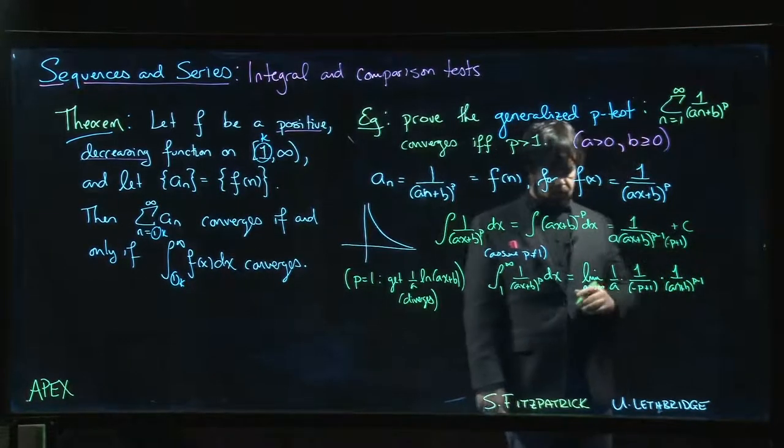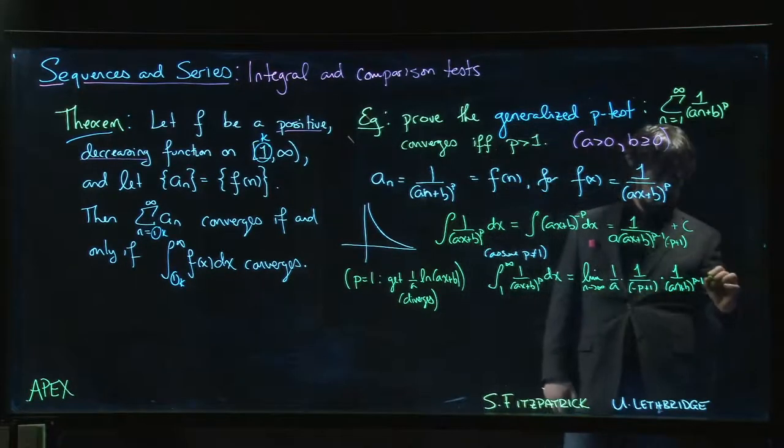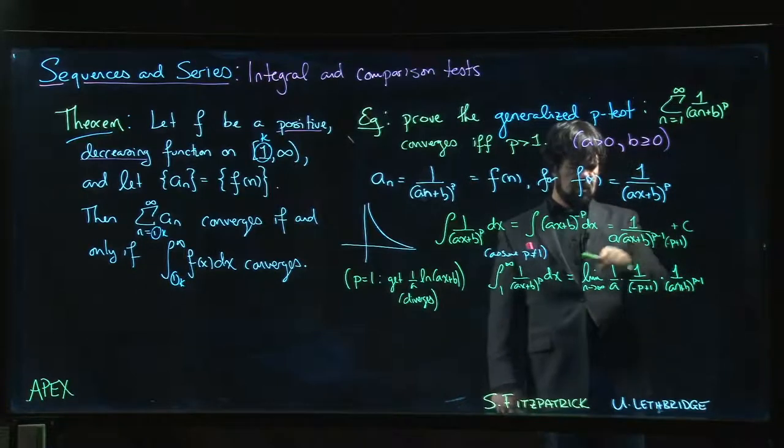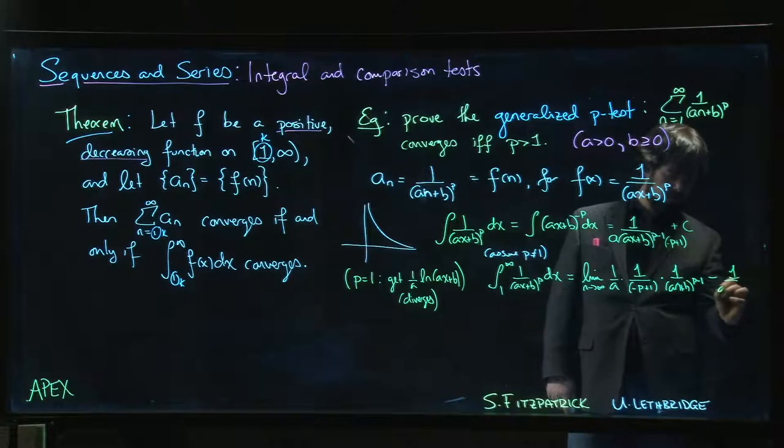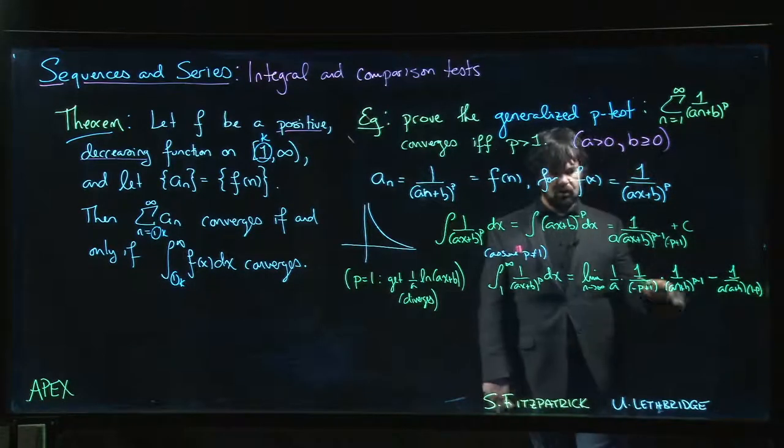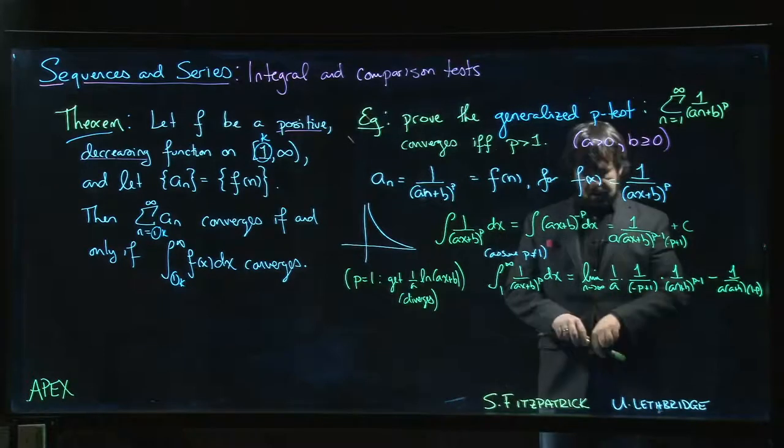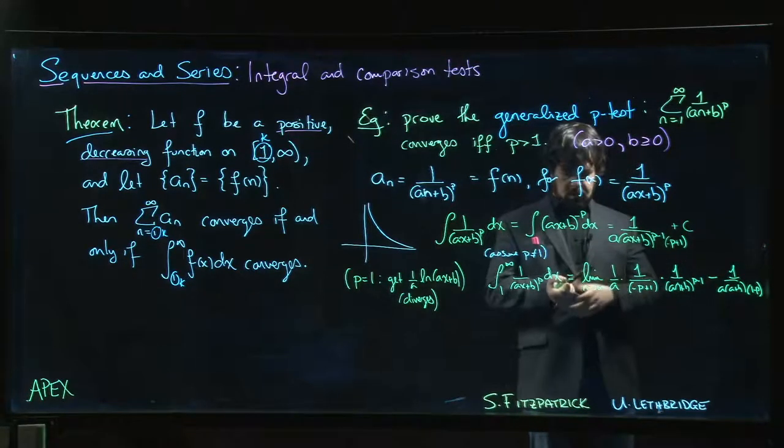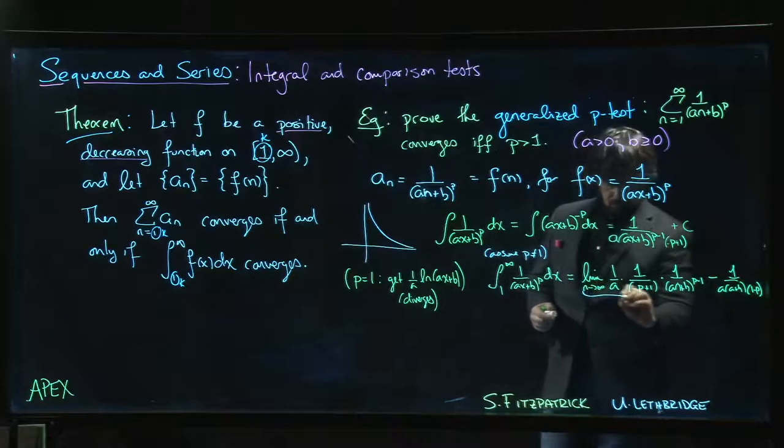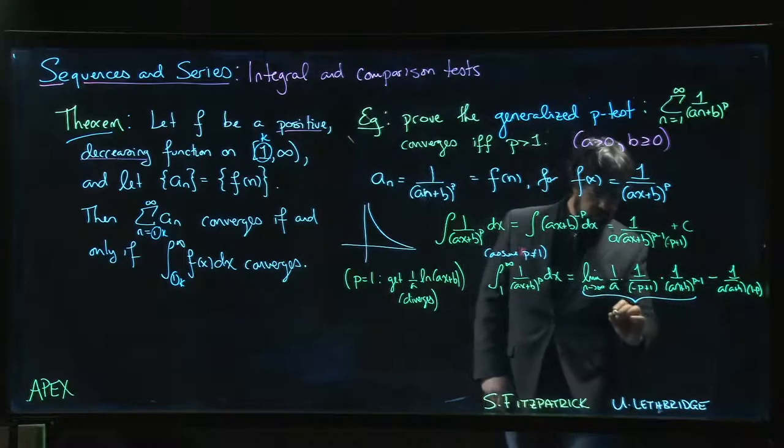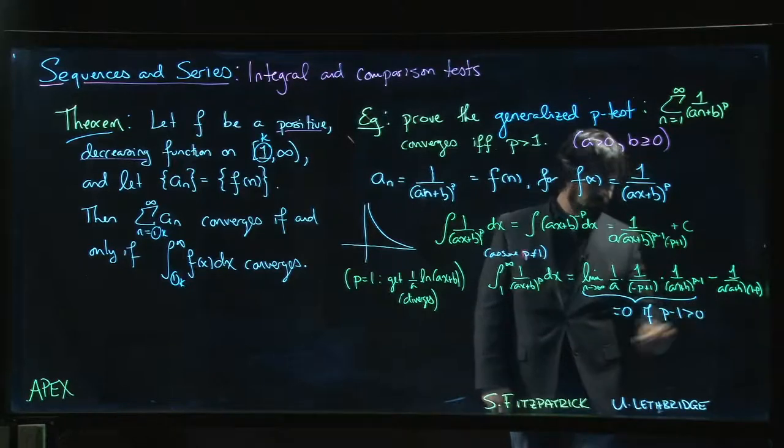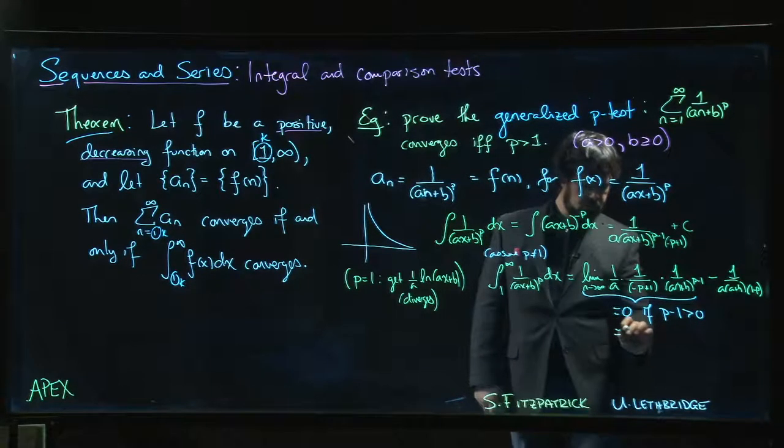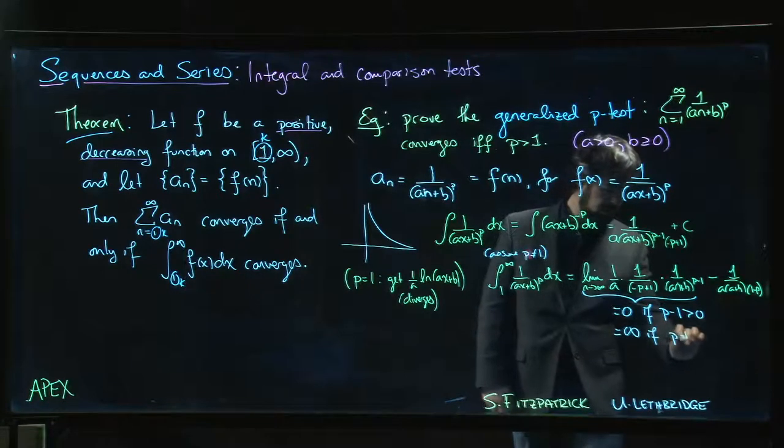Minus the lower limit. If we plug in one at the lower limit, we get a constant: 1 over a times (a + b) times (1 - p)—it's a constant. So we look at this and say, what can we say about this limit? This limit is going to be equal to zero as long as (p - 1) is positive, and it's going to be equal to infinity if (p - 1) is negative. We've already ruled out the p equals one case.